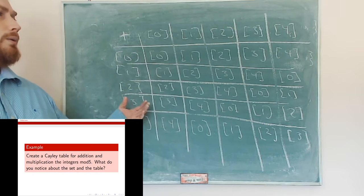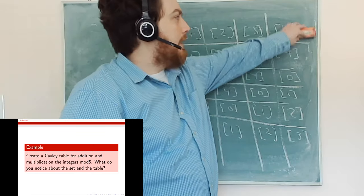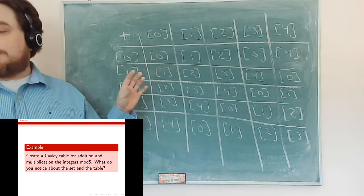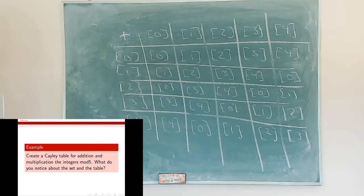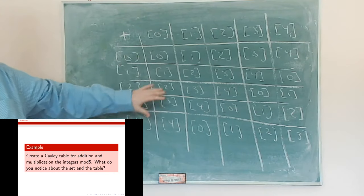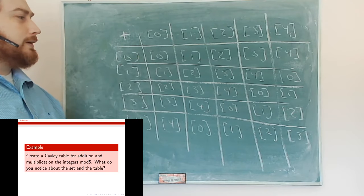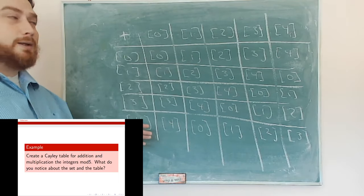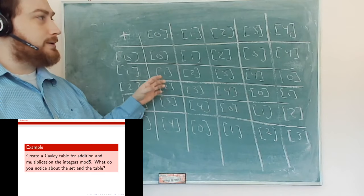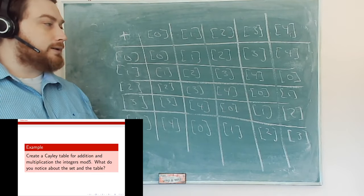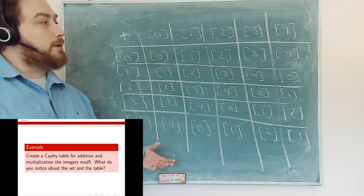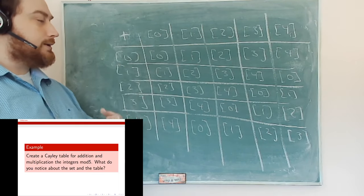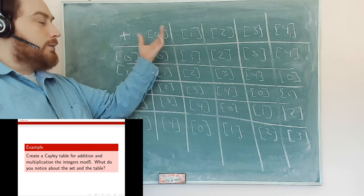Looking at this table, a couple of things stand out. If I take any of these sets and add them together, I always end up back in the set {0,1,2,3,4}. So this set is closed under addition — if I add any two equivalence classes, I end up back in one of these classes. This is analogous to the integers being closed under addition: adding two integers gives an integer. Another property to check is whether there is an identity element.